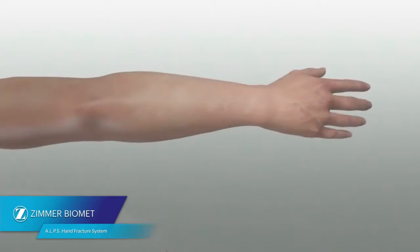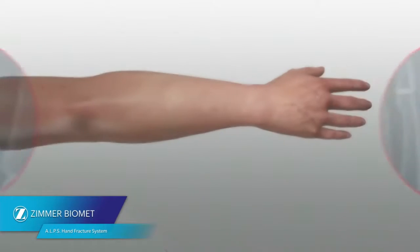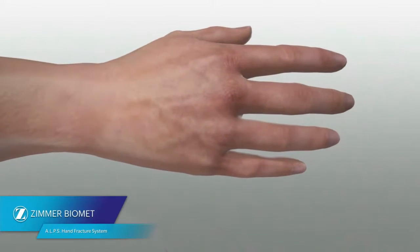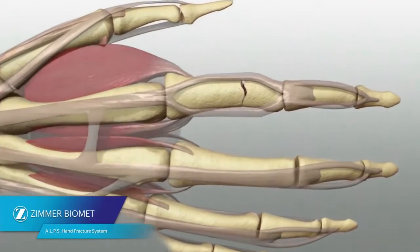To apply an ALPS Hand Fracture Plate to a metacarpal or phalanx fracture, begin by assessing the fracture fluoroscopically. Make an incision to expose the fracture site. Common approaches include a dorsal incision for metacarpals and either a dorsal or lateral incision for phalanges.